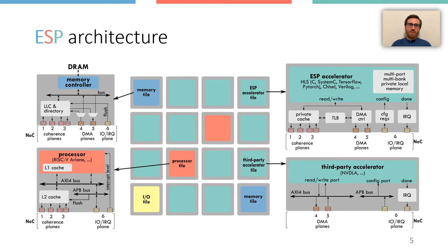For example, a typical NOC configuration for ESP would be three bidirectional planes for cache coherence, two for DMA messages and one for interrupts and for memory-mapped IO messages. This picture already includes the most recent contributions that we have made available with this work: the option to have the Ariane core in the processor tiles and the third-party accelerator tiles.